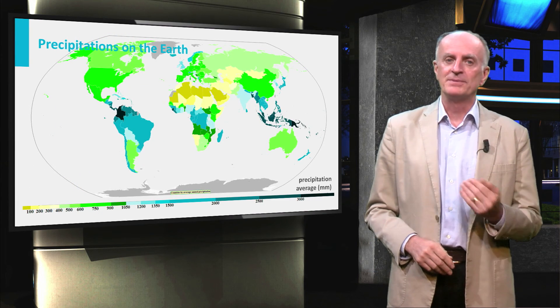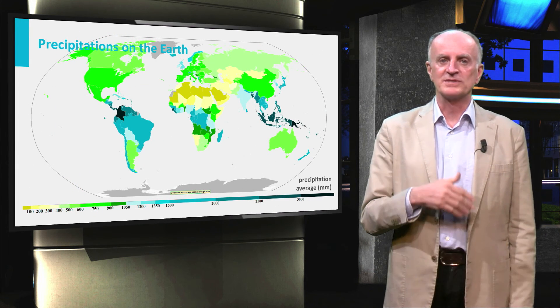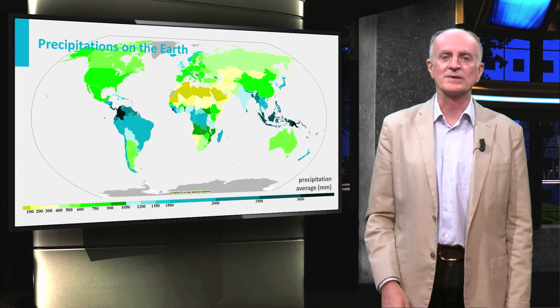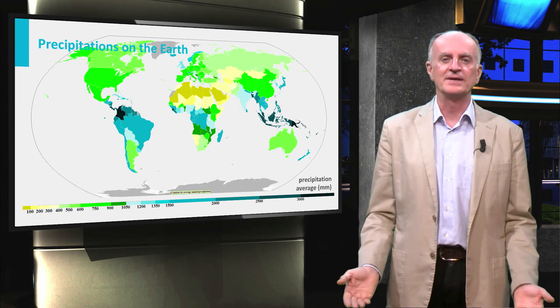In the slide, you see a typical map indicating distribution of precipitation on the Earth. The largest amount of rainfall is indeed in the equatorial regions where air masses are heated up and rise.